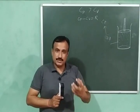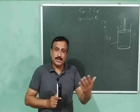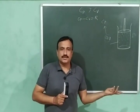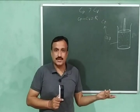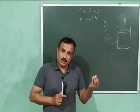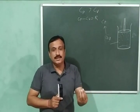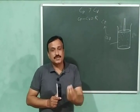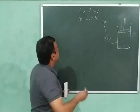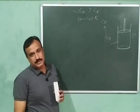The heat supplied to the system at constant pressure to increase its temperature by one degree Celsius is called heat capacity at constant pressure. In this way, at constant pressure we have to supply more heat to increase the temperature through one degree Celsius than at constant volume. That is why CP is greater than CV.